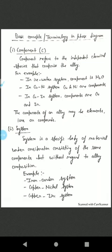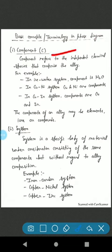Before going to study the phase diagram, here are some basic terminologies. First is component. Component refers to the independent chemical species that comprise the alloy. For example, in ice-water system component is H2O, in copper-nickel system copper and nickel are components, in copper-zinc system components are copper and zinc. The components of an alloy may be elements, ions or compounds.